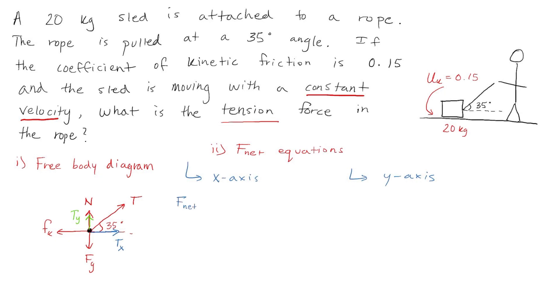F net x is the sum of all the forces acting along the x-axis. So that would be Tx minus the kinetic friction. Kinetic friction is negative because it's a vector that points to the left. Now we were told that the sled is moving with a constant velocity. That means there's no acceleration. So F net x is equal to 0. We can also replace the kinetic friction with mu k times n. And we can rearrange this equation to say that Tx is equal to mu k times n.